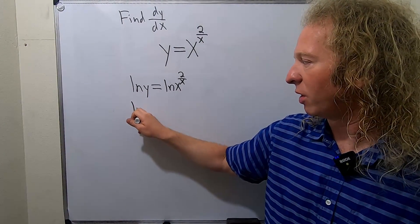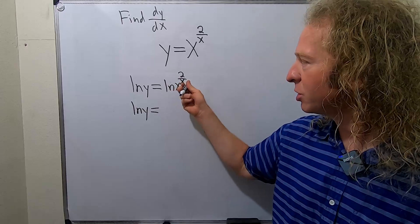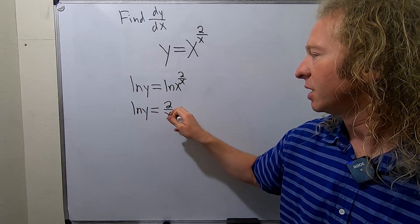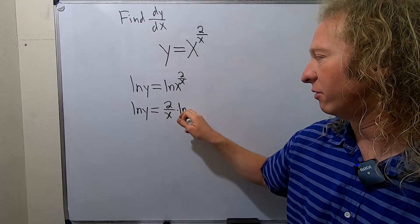So this stays the same, ln of y. And then here you use the power rule, so you bring down the 2 over x. So it's 2 over x times the natural log of x.